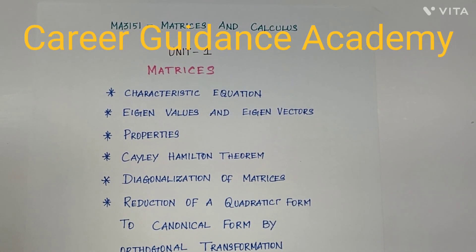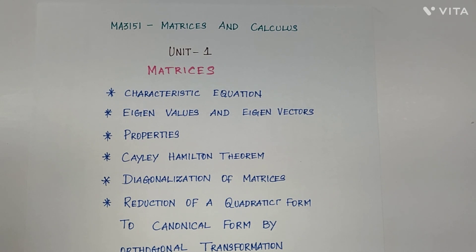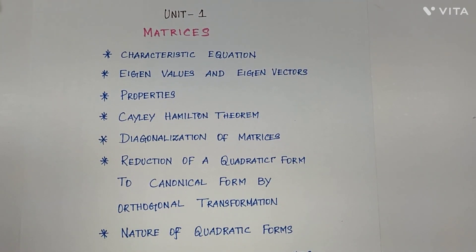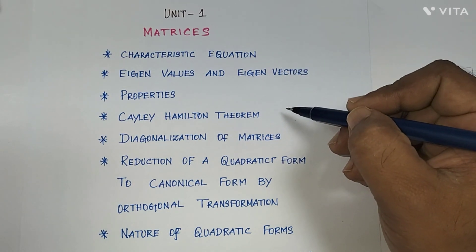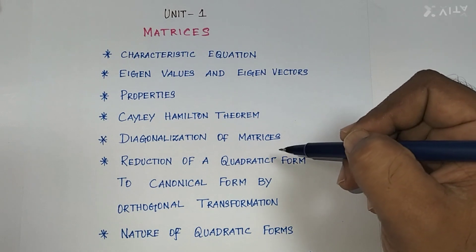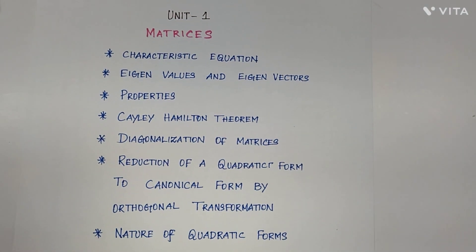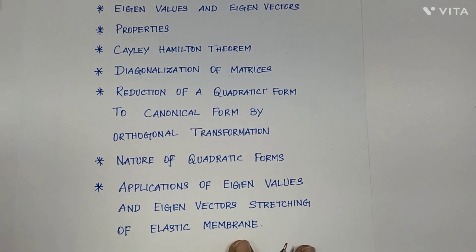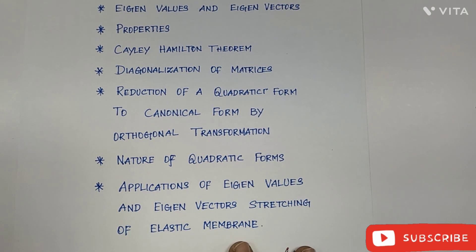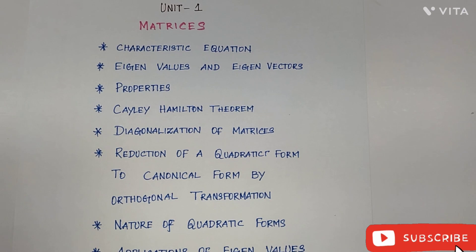Welcome to Career Guidance Max playlist. In this video I am going to start the first semester Maths paper common to all affiliated colleges from Anna University, that is MA3151 Matrices and Calculus. I am going to start Unit 1: Matrices. In this unit, matrices will have several sections: characteristic equation, eigenvalues and eigenvectors, eigenvalues and eigenvectors based on properties, and Cayley-Hamilton theorem, diagonalization of matrices, and reduction of a quadratic form to canonical form by orthogonal transformation, and the nature of quadratic forms. At the end of this unit you will also have applications — how to apply eigenvalues and eigenvectors for solving stretching of an elastic membrane.